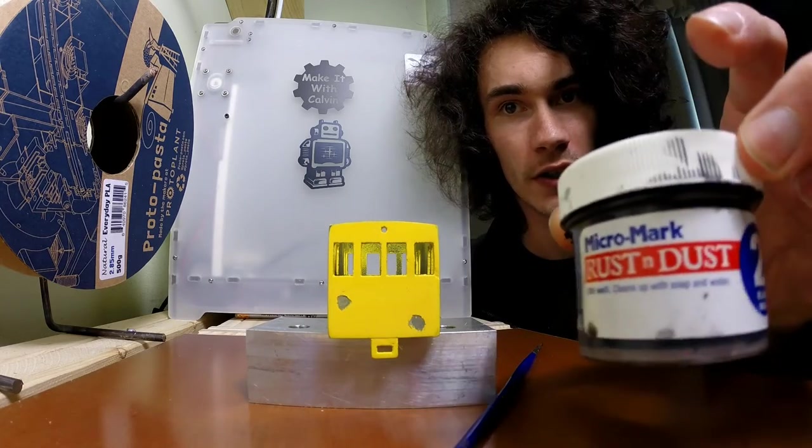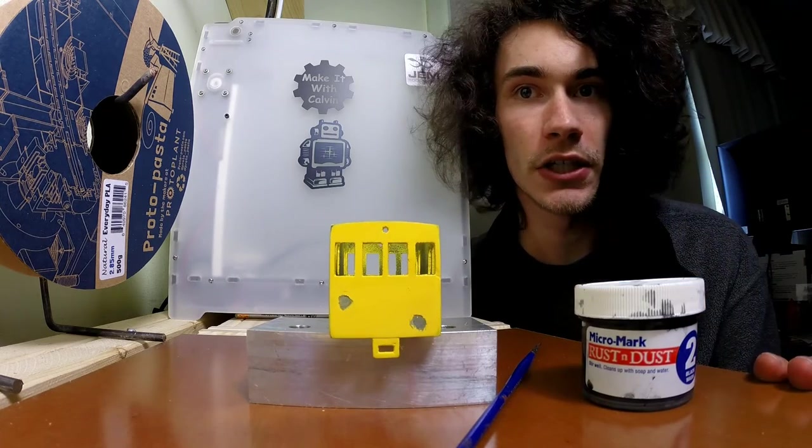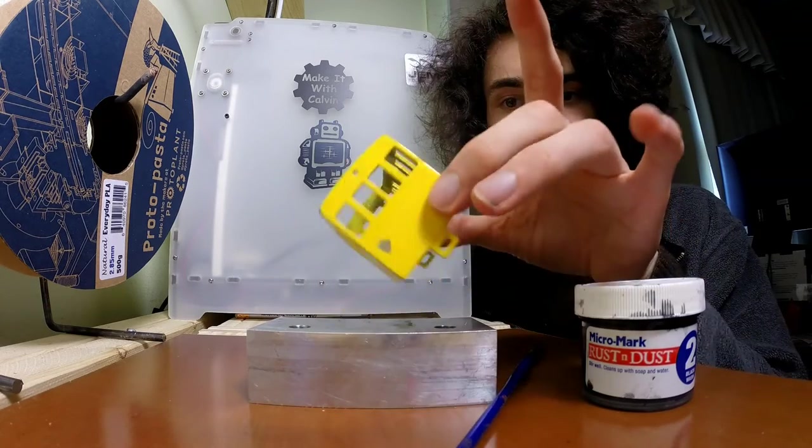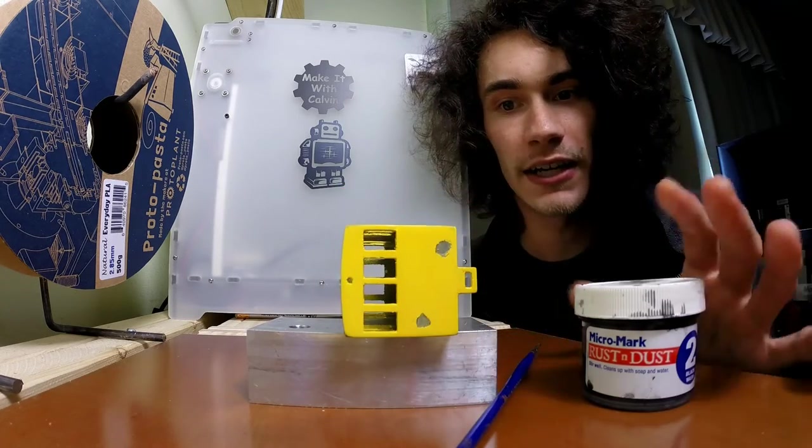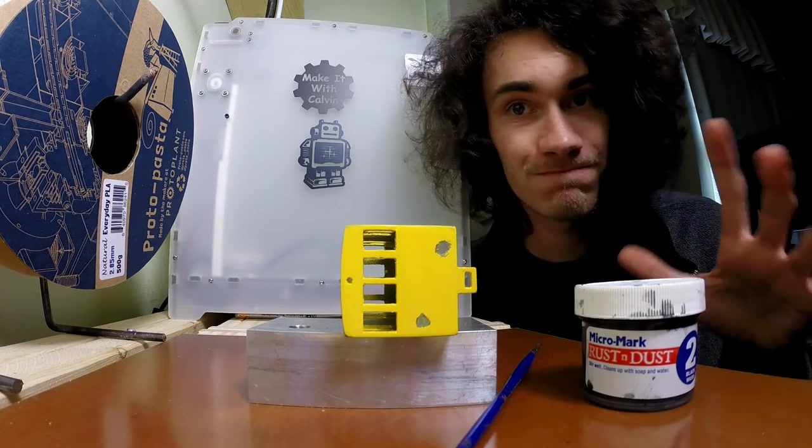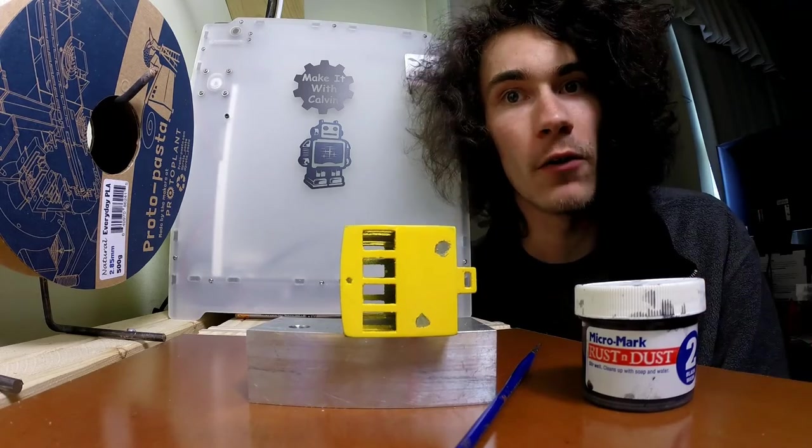So the next step will be taking this from this bright bright yellow and toning it down a bit. So what I'm going to do is we're just going to lay the model on its side and brush a little bit on here. What it's going to do is it's going to pretty much go into the cracks and corners and crevices and help draw them out visually.